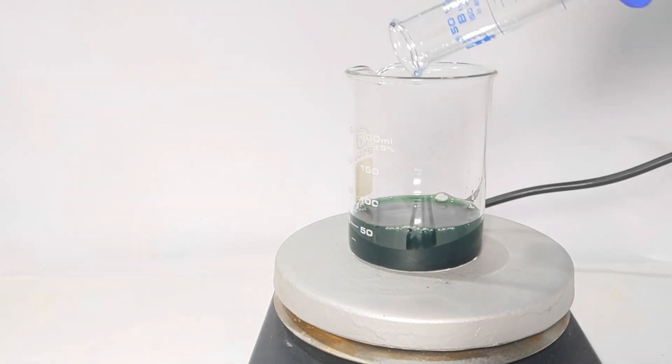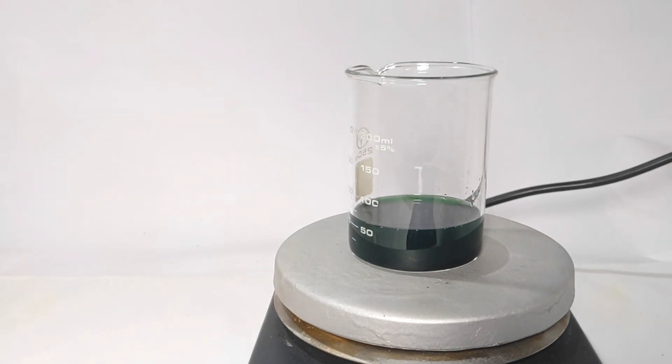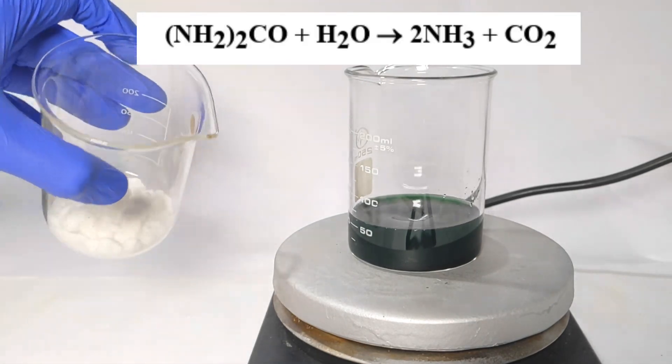1.4 grams of chromium III chloride was placed inside. Then 50 milliliters of distilled water was added. Chromium III chloride quickly dissolves to give a deep green solution. Now 10 grams of urea was added to it.